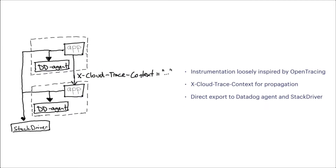We ended up building a custom instrumentation library inspired by OpenTracing. It had auto-instrumentation for all the things we commonly use at Shopify: Elasticsearch, Redis, Memcache, Rails, MySQL, and so forth. We had just moved into GCP and it seemed like a good idea to leverage GCLB's tracing support, so we used X-Cloud-Trace-Context for propagation. We never really got much out of that and we migrated our load balancers to NGINX, but by then we were stuck with that propagation format and we had no good reason to change it. Finally, we hedged our bets for a while with backends and had dual exporters to Datadog and Stackdriver.